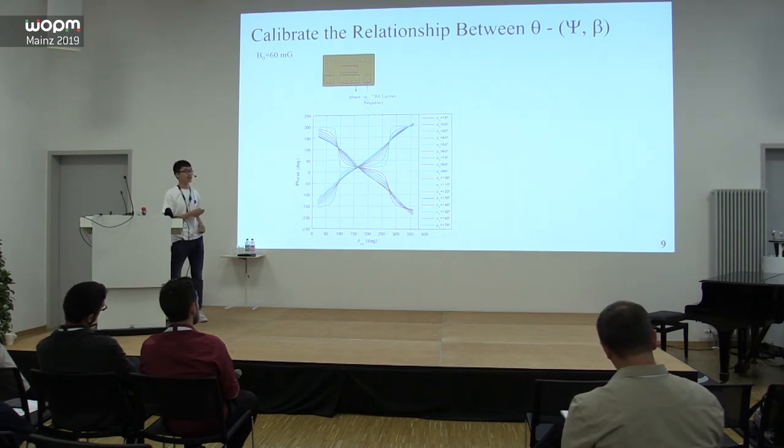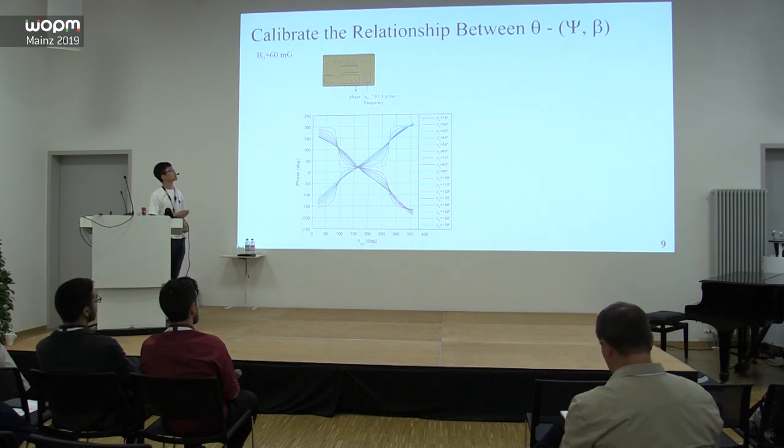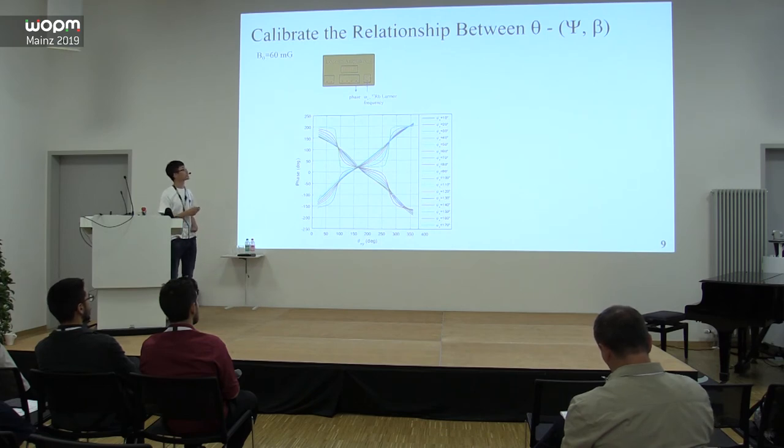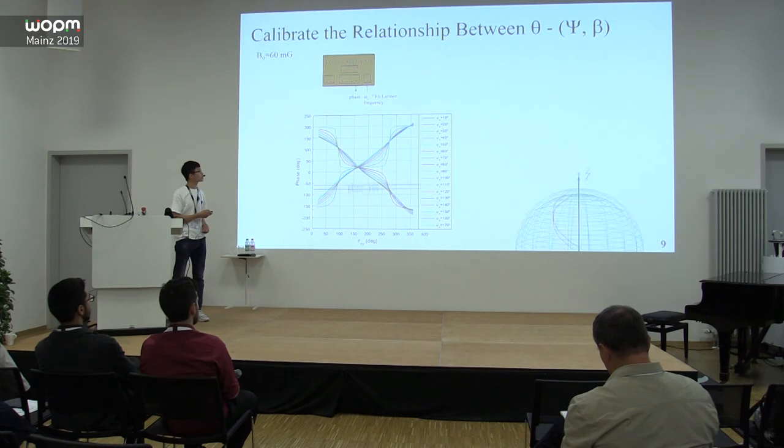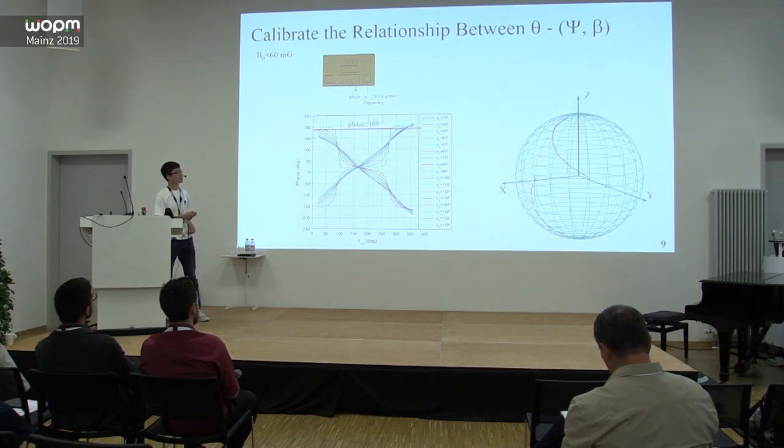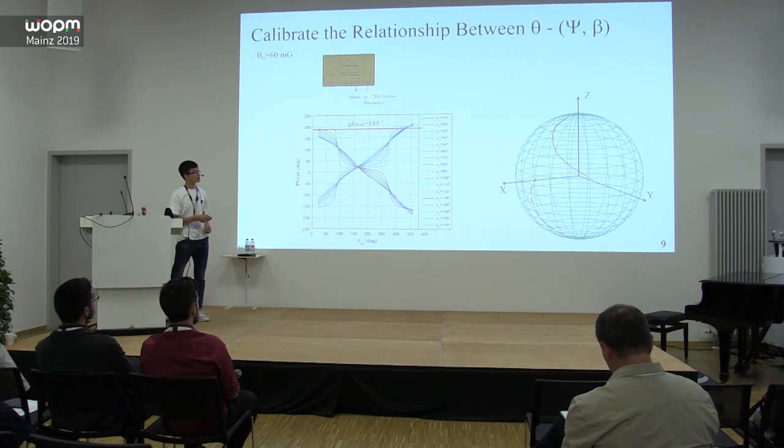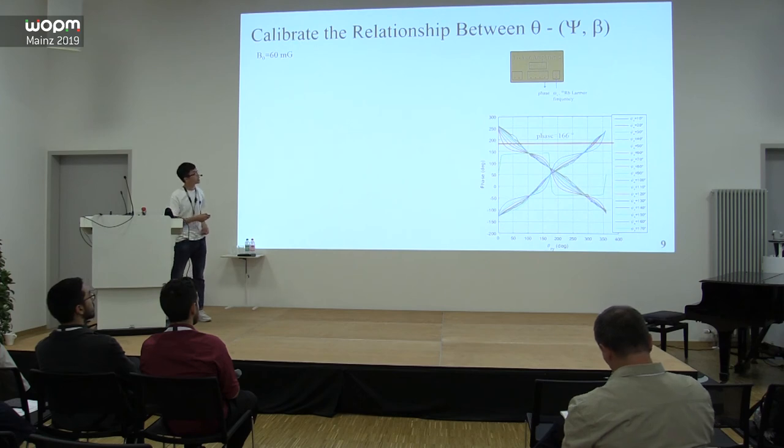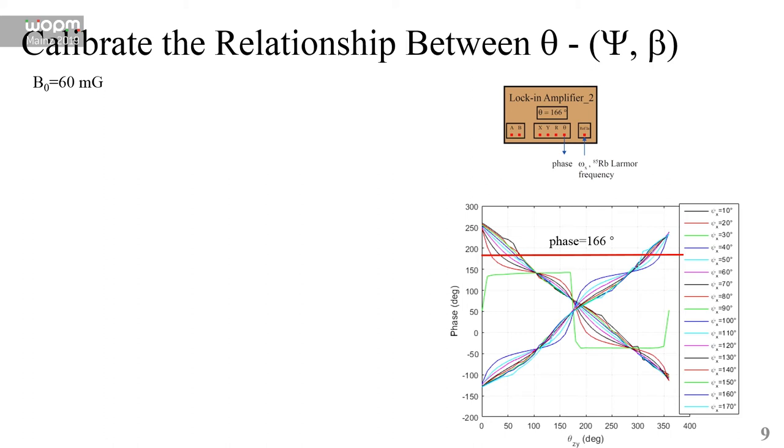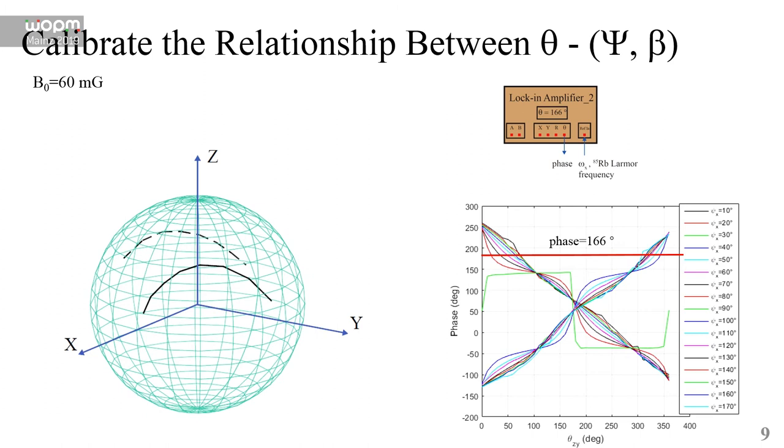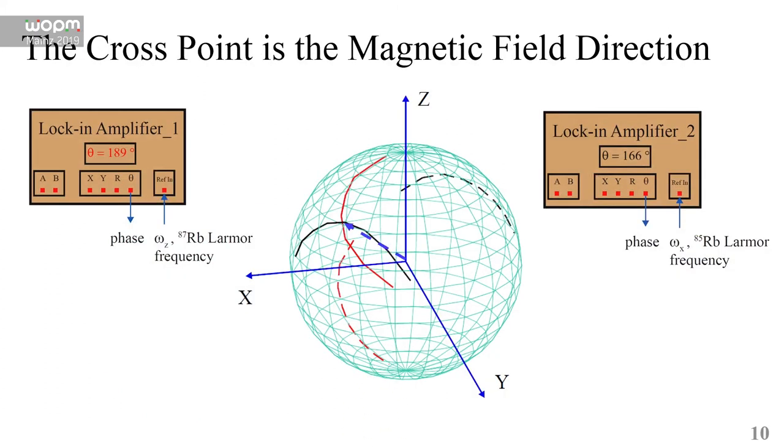After we generate the database, we read a θ from the first lock-in amplifier as 189 degrees. We can draw a line using the database, and it gives us the red curve on the sphere. At the same time, we read a θ as 166 degrees from lock-in amplifier 2. We draw another line and it gives us another curve. The cross point of these two curves just fixes the direction of the magnetic field.